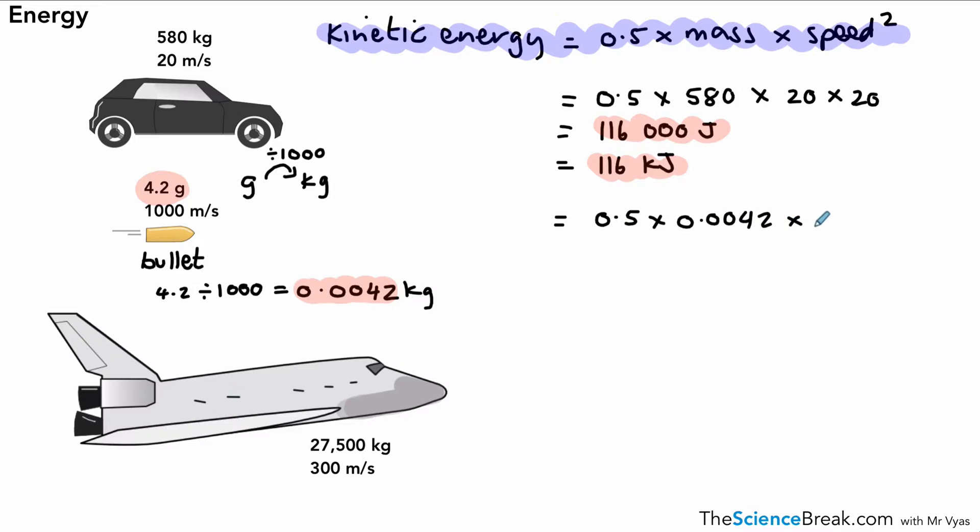Times a thousand squared, or times a thousand times a thousand, and that will give us an answer of 2100 joules. And again, we can write that in kilojoules by dividing by a thousand—that'll give us 2.1 kilojoules. So there's our answer for the bullet. Actually, might be worth just numbering these so we know which question goes along with which answer.